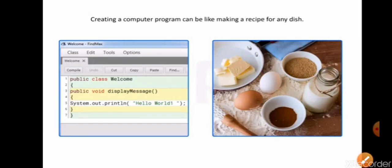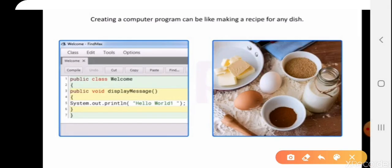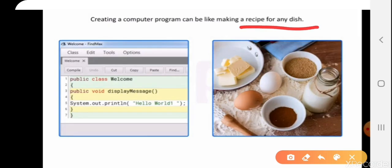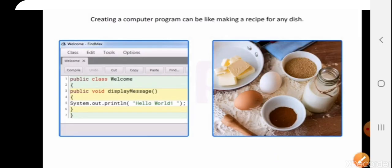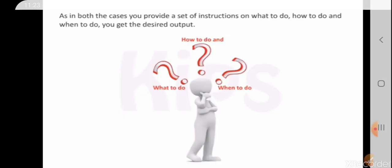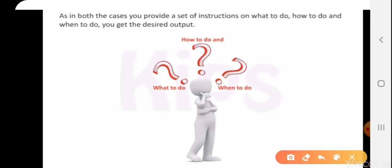Creating a computer program can be like creating a recipe for any dish. In your kitchens, you create many dishes. For creating any dish, we require two things: a set of instructions and ingredients.